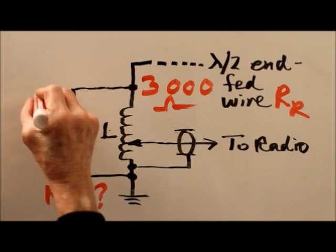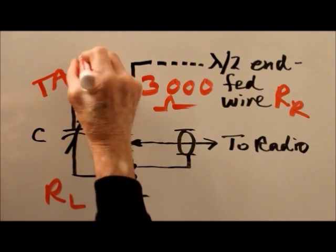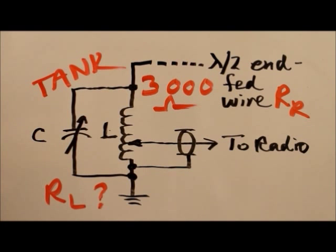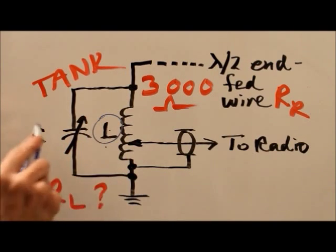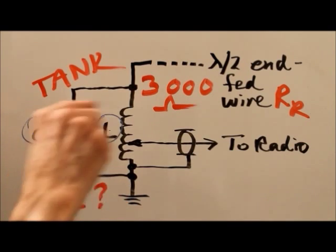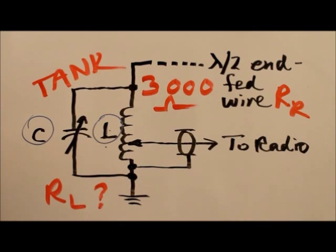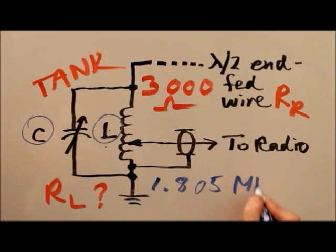So I said, okay, suppose you take what is called a tank circuit. I'm not sure why they call this old circuit a tank. But you take a coil and an inductor, L, and a capacitor, C, and you set their values such that you get resonance in this circuit at the frequency of interest. Let's just say that's 1.805 megahertz.